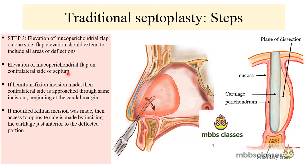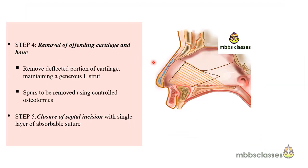Next, the mucoperichondrial flap is raised on the contralateral side. After one side flap elevation is done, an incision is made on the cartilage and the flap is elevated on the opposite side. If using a hemitransfixion incision, the contralateral side can be approached through the same incision; if using modified Killian's incision, access to the opposite side is made by incising the cartilage just anterior to the deflected portion.